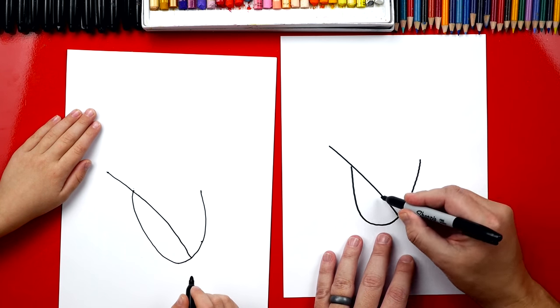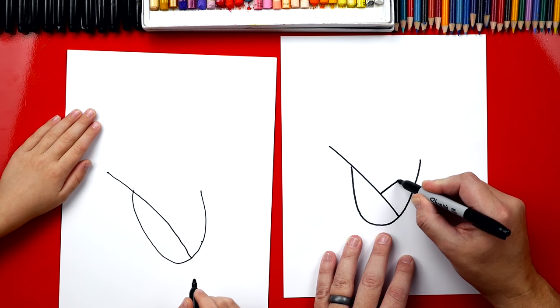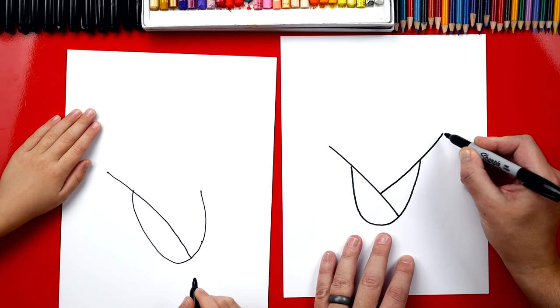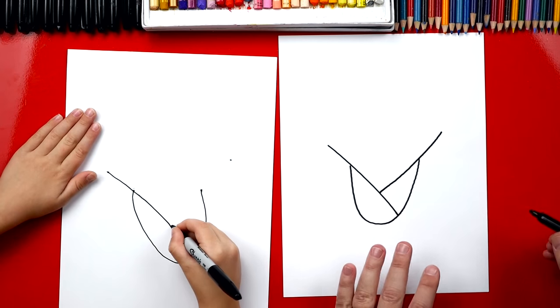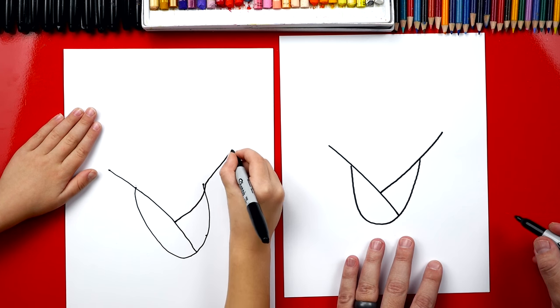Now we're going to do the same thing on the other side, and I'm going to start down here this time and we're going to curve up like that. So we start right here, touch, and then come up past. Oh, I like that.